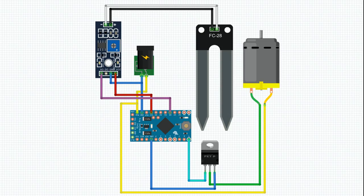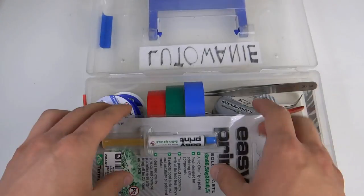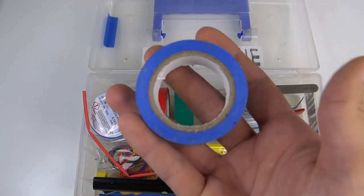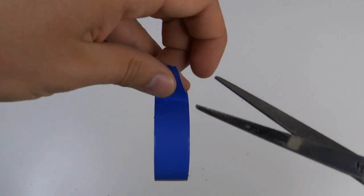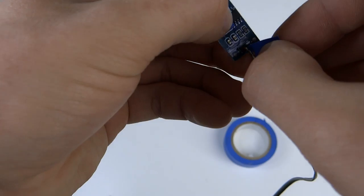Here is the schematic with all of the connections. Before we start soldering, we have to protect the cables that connect the moisture sensor with its control board. We can do that with insulation tape.